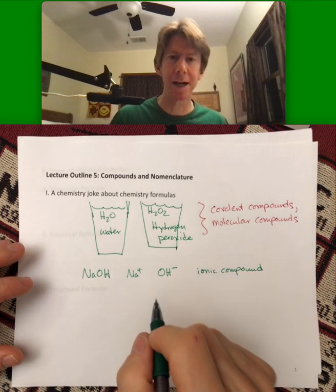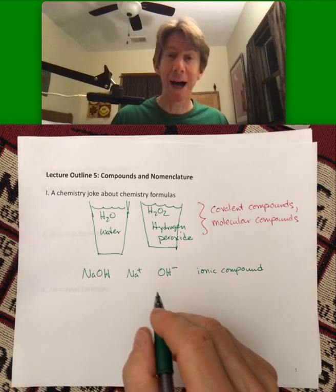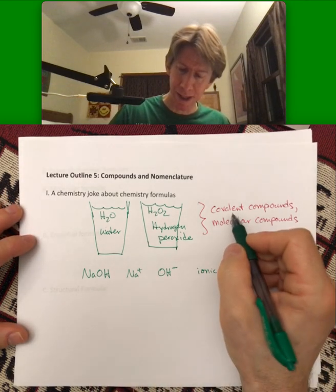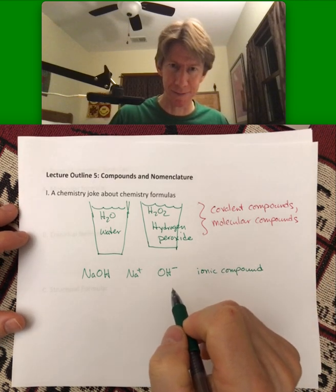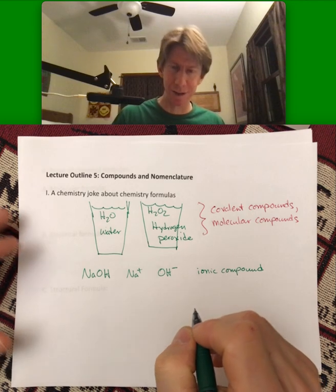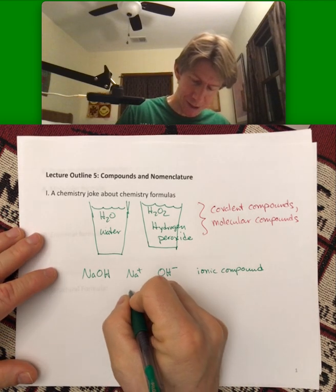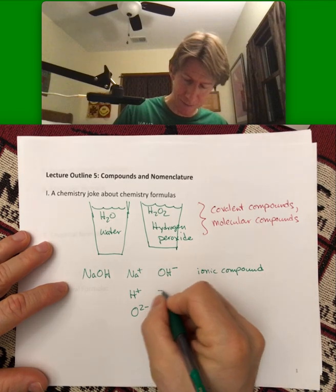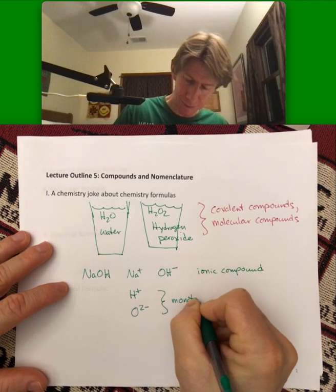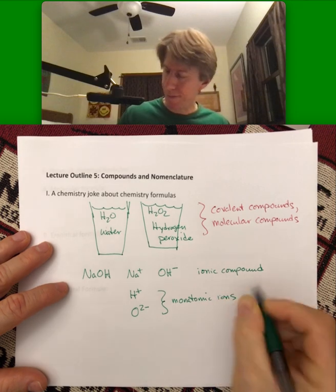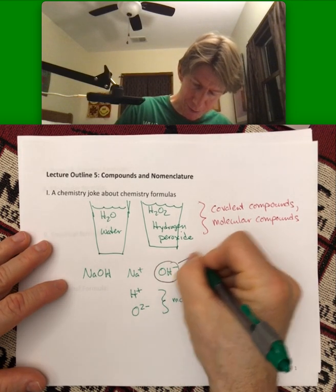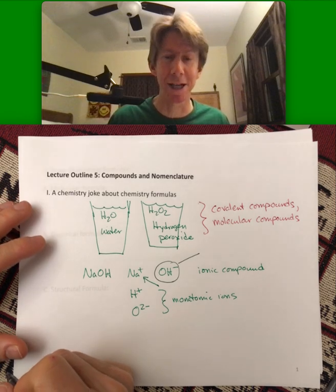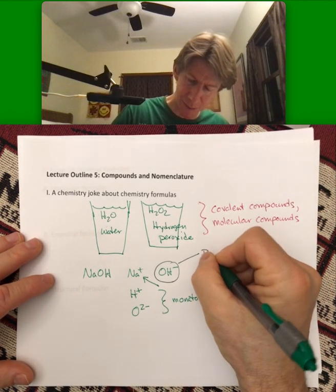So much of general chemistry relies on you being able to tell the difference between an ionic compound and a covalent or molecular compound. These are what are called monatomic ions, and sodium is also a monatomic ion. Hydroxide (OH-) is a polyatomic ion.